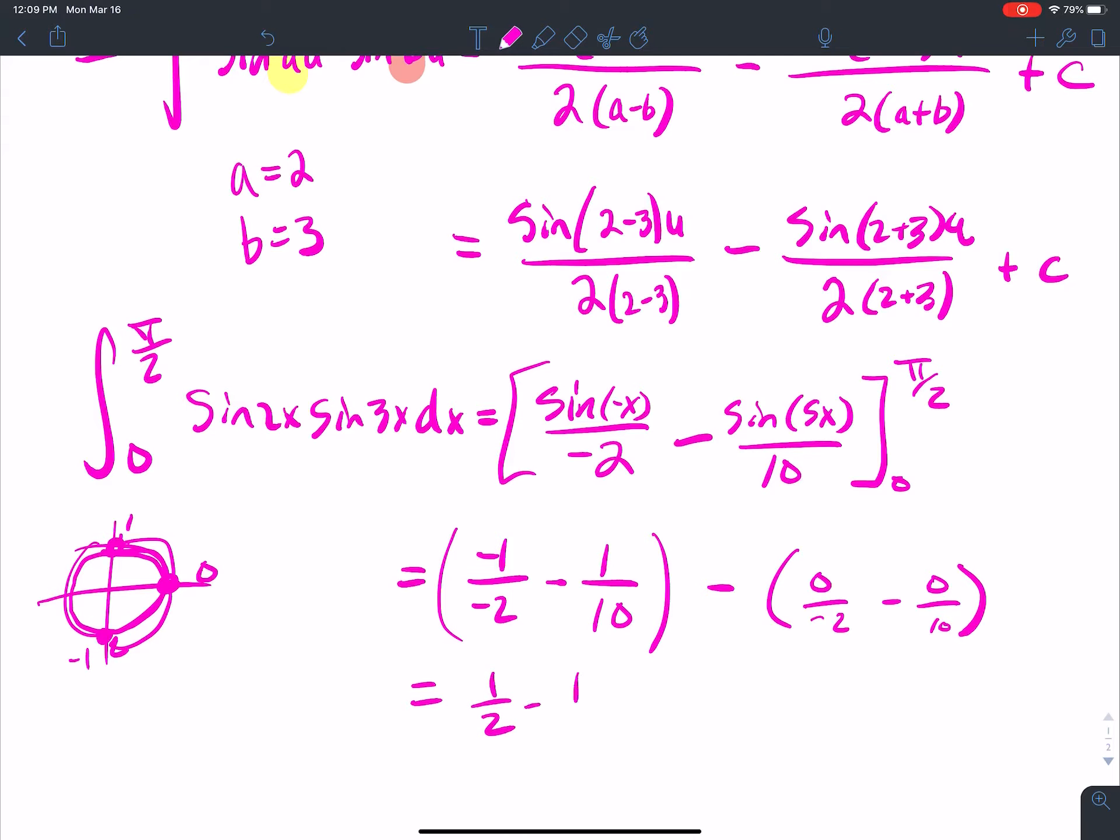So I get one half minus a tenth equals what is that? Four tenths, which is two fifths. And there's your answer right there. No big deal.